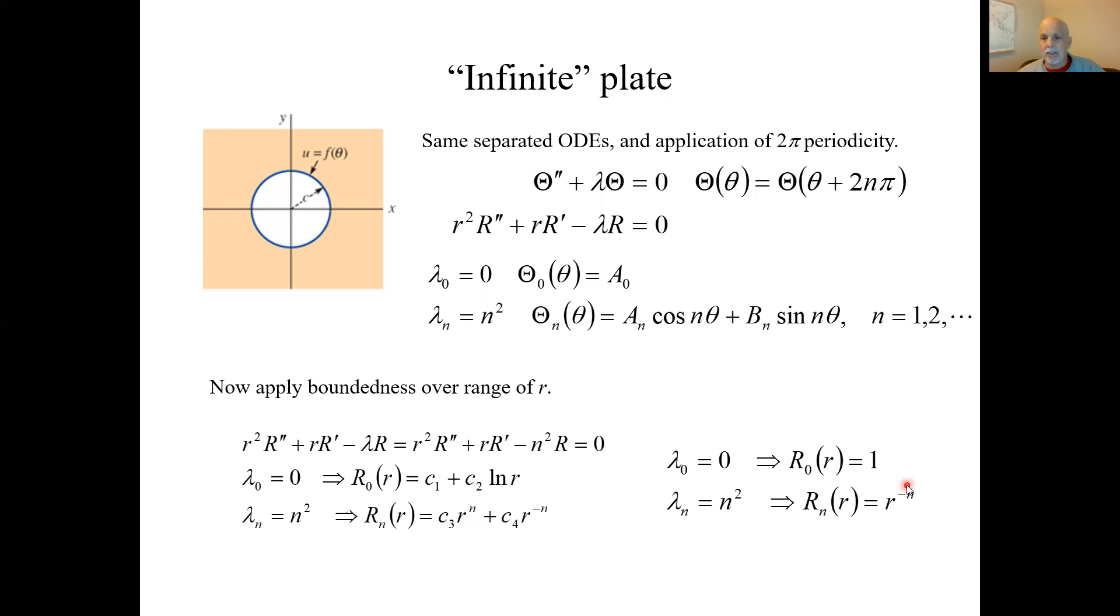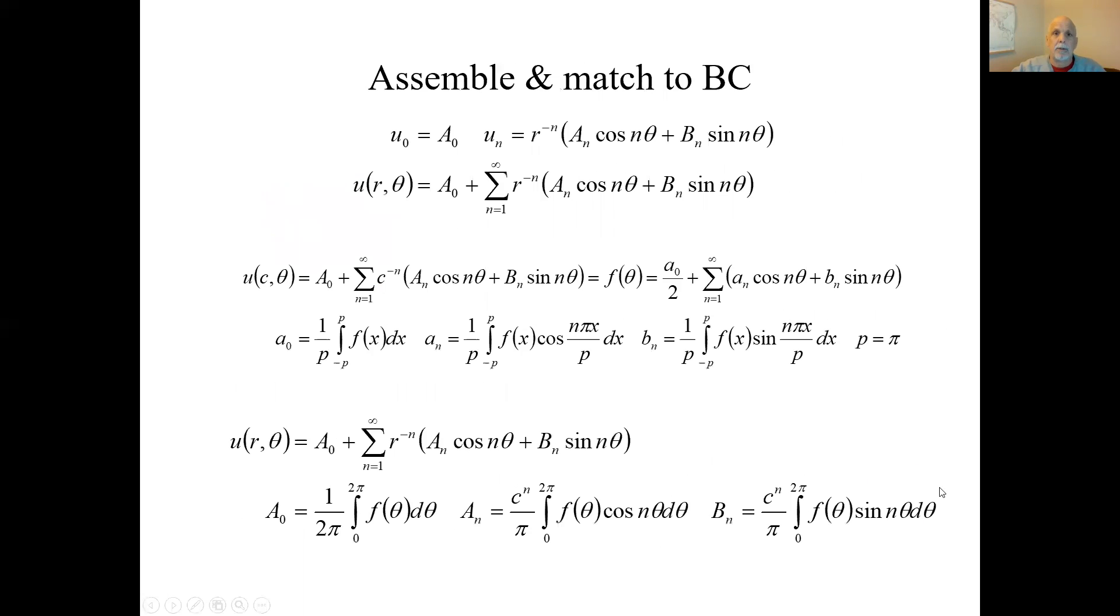So everything's the same here, except this function here, where the R's for the positive integers are R to the minus n instead of R to the n. The rest of it, we assemble pretty much the same way. Here we have the R to the minus n here.